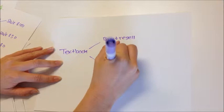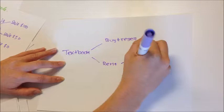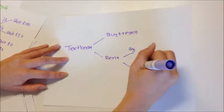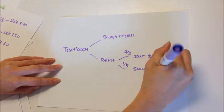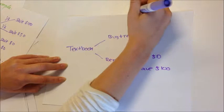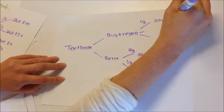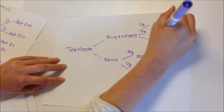So if you rent out your textbook, it is two-thirds likelihood that you will save $0. But there is also the one-third likelihood that you will save $100 if you rent out your textbook. This differs from buying and reselling your textbook. There are three options here. There is one-third likelihood that you will save $100. And then there is another one-third likelihood that you will save $50. And there is also a third possibility that you will save $0.